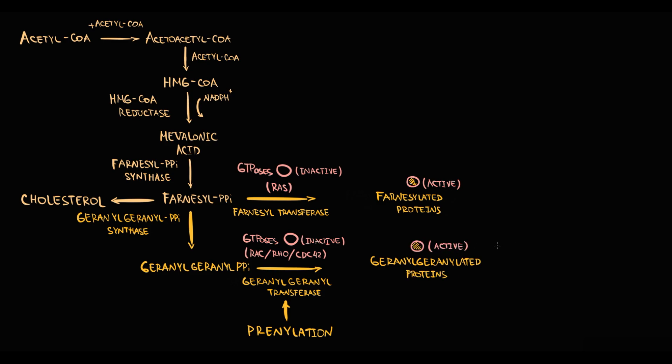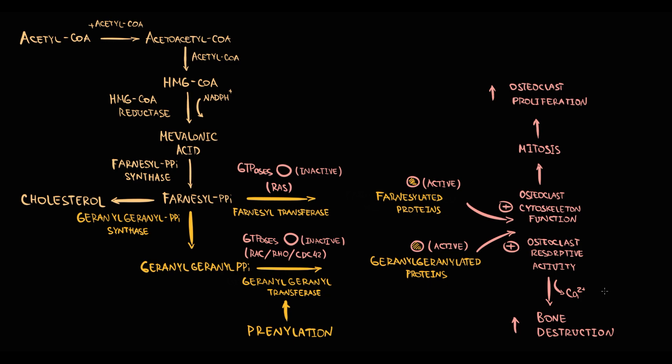In activated state, GTPases regulate osteoclast cytoskeletal function. By this they provide mitosis, and thereby they provide proliferation of osteoclasts. They also stimulate osteoclast resorptive activity. By this they release calcium from the bone tissue, and this results in bone destruction. So they are absolutely vital for osteoclast function.